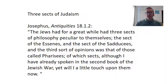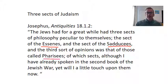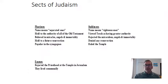One sect we don't know too much about, though more information is emerging through archaeology, is the Essenes. A key primary text is Josephus, a Jewish historian living in the first century AD who wrote Antiquities. In chapter 18-1-1 he discusses these three sects — the Essenes, the Sadducees, and the Pharisees — and also covers them in his book The Jewish War, which you can look up online.